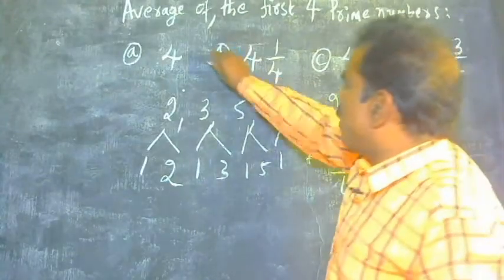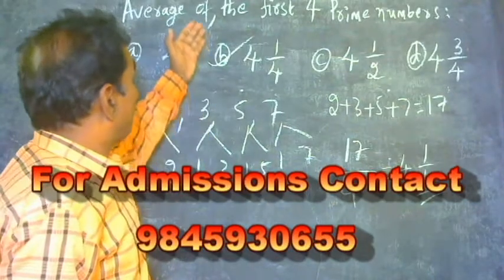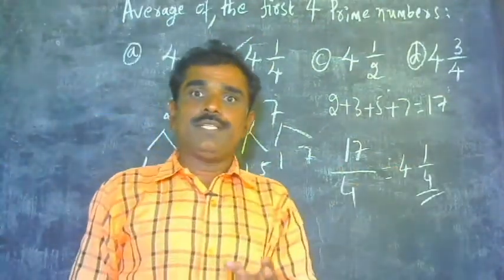So, this is the answer for this particular question. That is 4 and 1/4 is the average of the first 4 prime numbers, hence the solution.